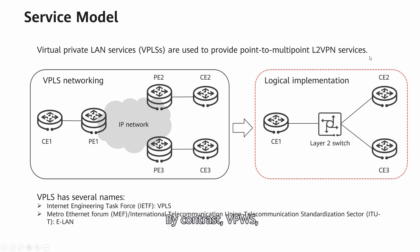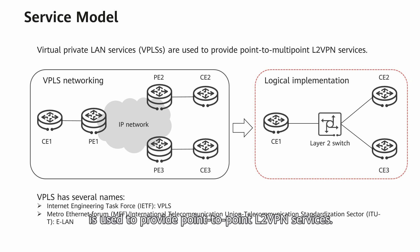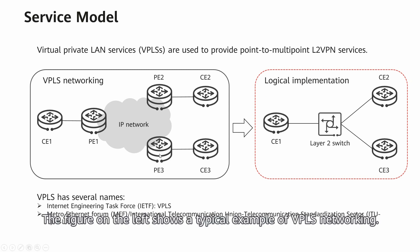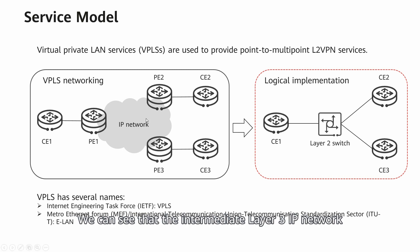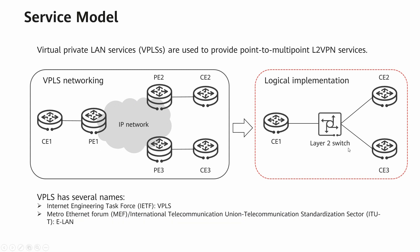By contrast, VPWS, which is short for virtual private wire service, is used to provide point-to-point L2 VPN services. The figure on the left shows a typical example of VPLS networking. We can see that the intermediate Layer 3 IP network simulates a Layer 2 switch, to which CEs are connected in order to exchange Layer 2 data.